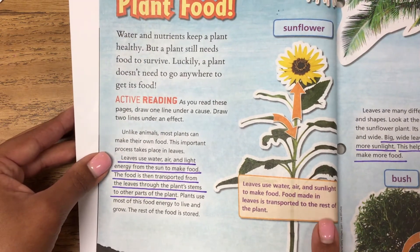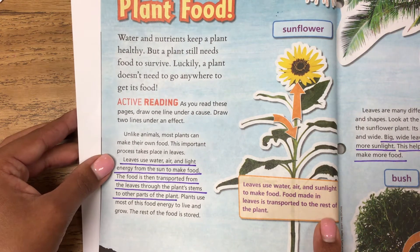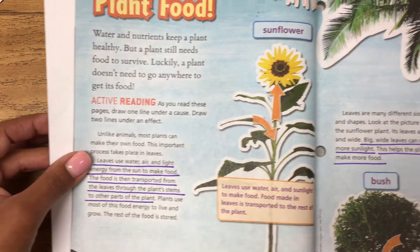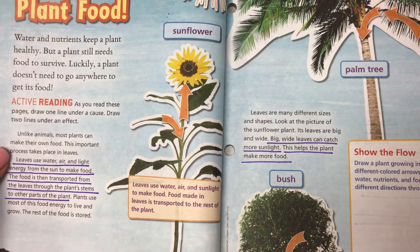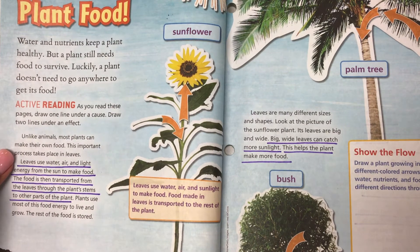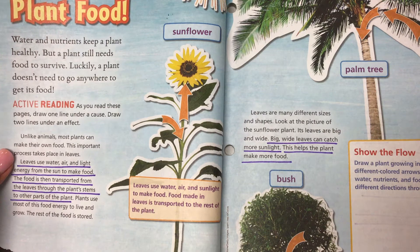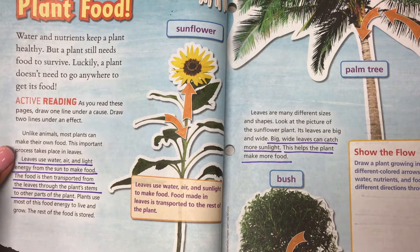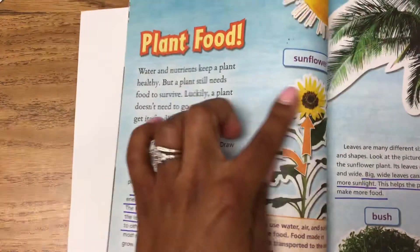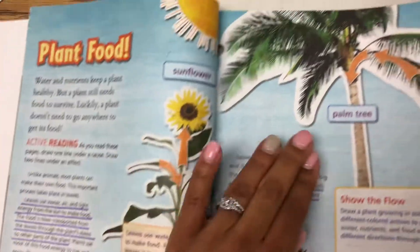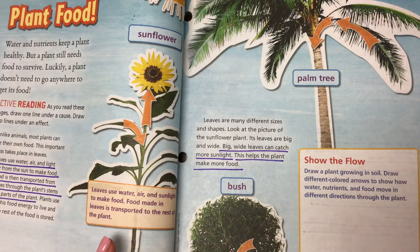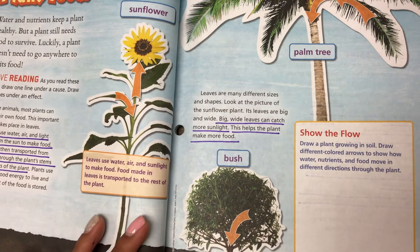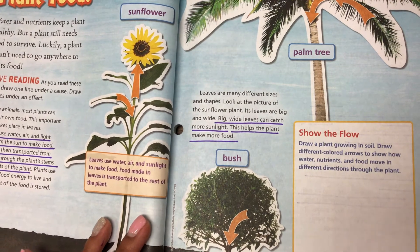The caption says leaves use water, air, and sunlight to make food, and food made in leaves is transported to the rest of the plant. Leaves are many different sizes and shapes. Look at the picture of the sunflower plant — its leaves are big and wide. Big, wide leaves can catch more sunlight, which helps the plant make more food. We have a sunflower, a bush, and a palm tree. Draw a plant growing in soil and draw different colored arrows to show how water, nutrients, and food move in different directions through the plant.